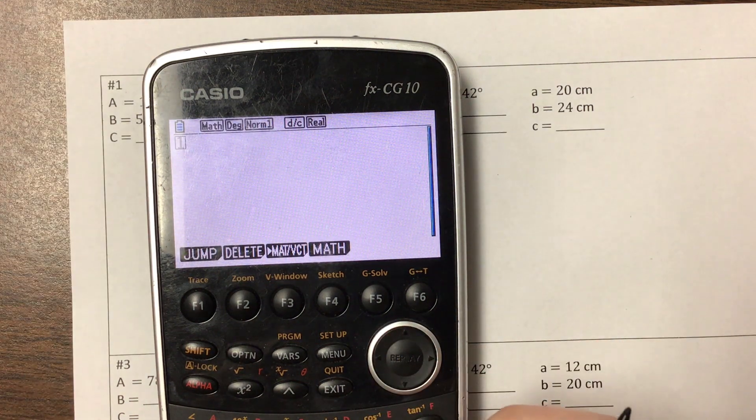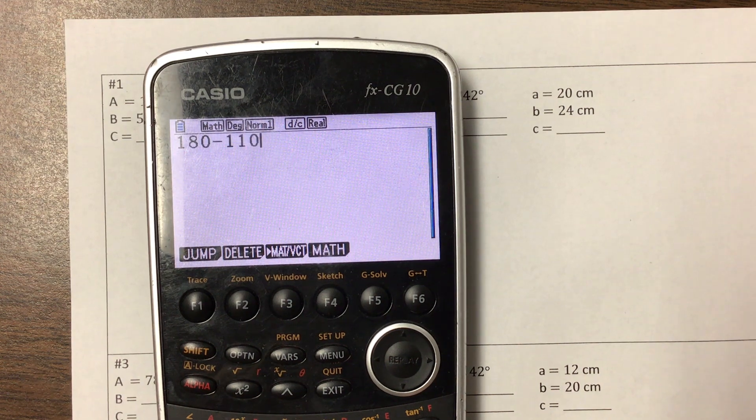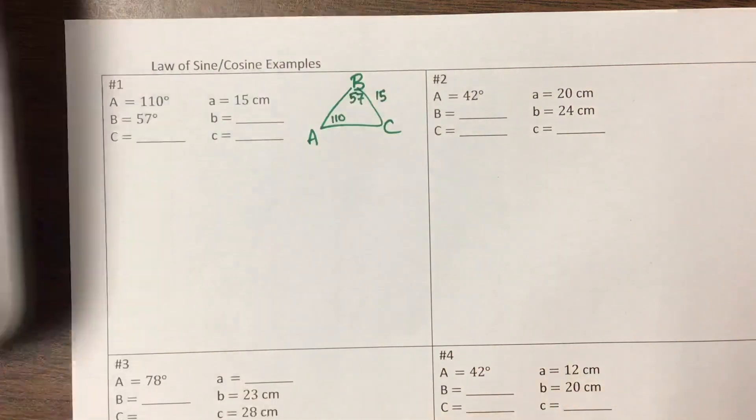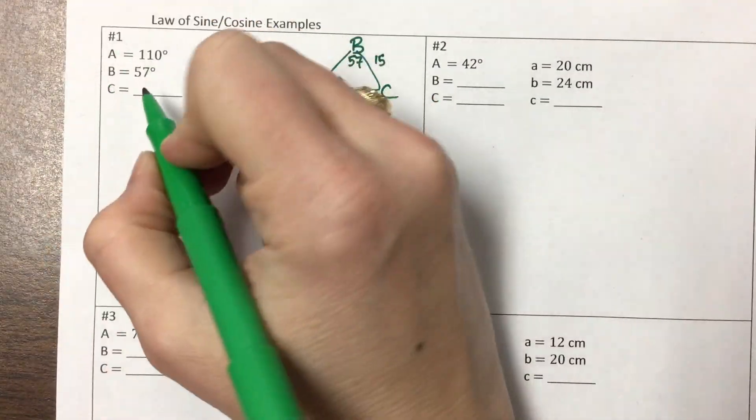So the first piece that I can do, I know that my whole triangle adds up to 180, so if I subtract away those two angles that I know, I know the third angle has to be 13 degrees. So that's an easy way to start on this particular problem.